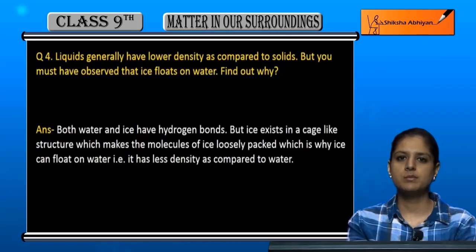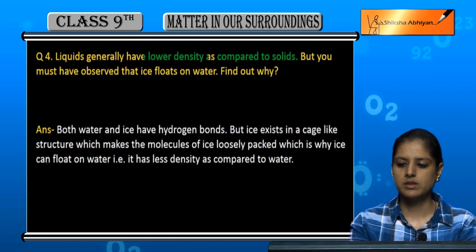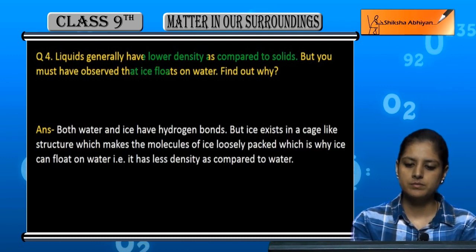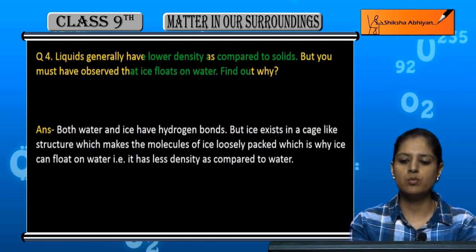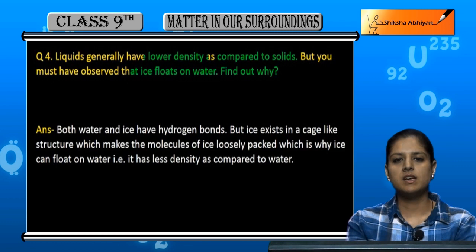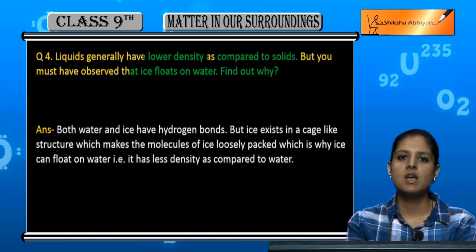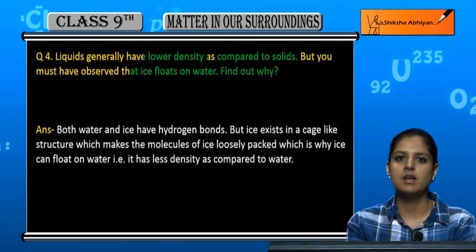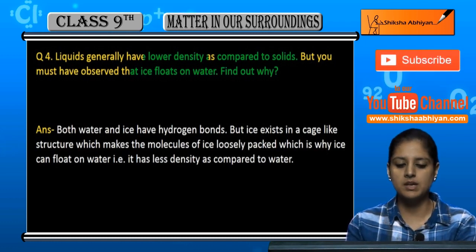Question number four: liquids generally have lower density compared to solids. If we compare a liquid with a solid, its density is generally lower. But in the case of ice, it floats on water. Ice is a solid and water is a liquid — generally the density of solids is higher than liquids, but here the solid floats. So why does this happen? I am going to explain why.